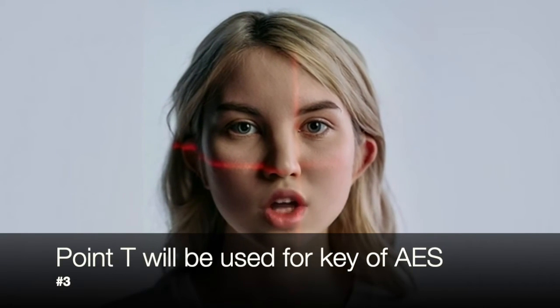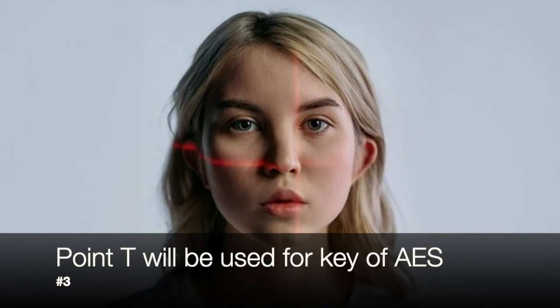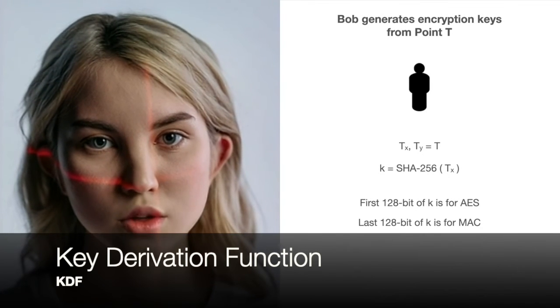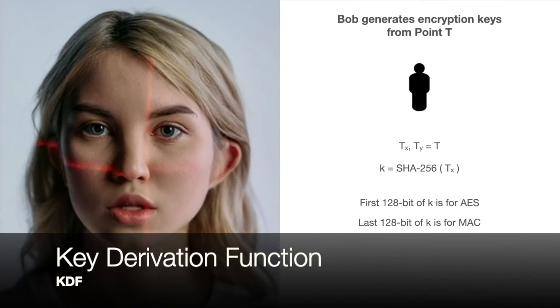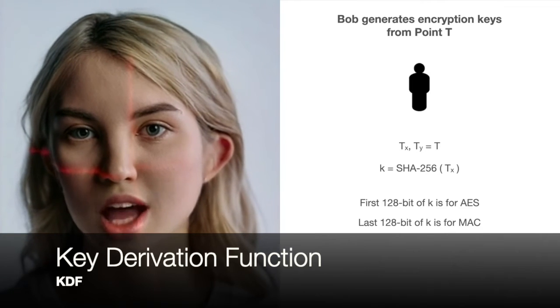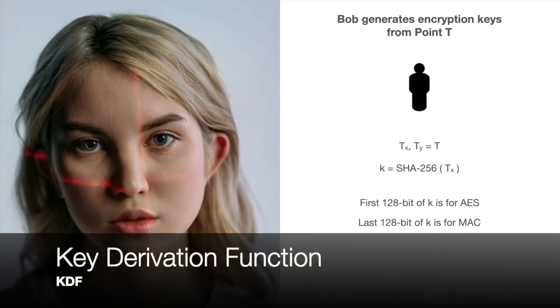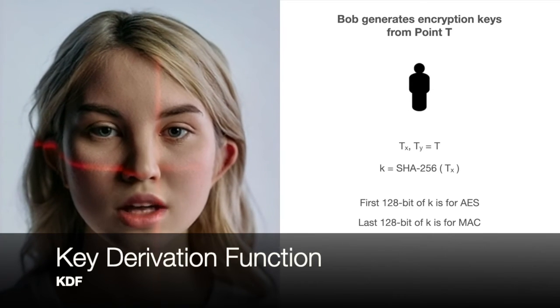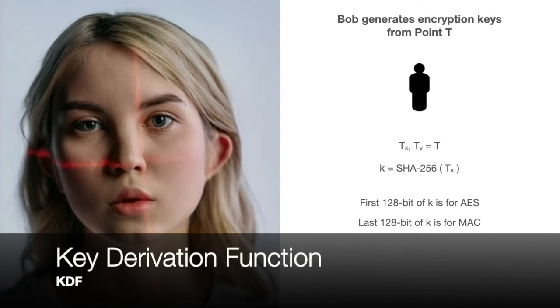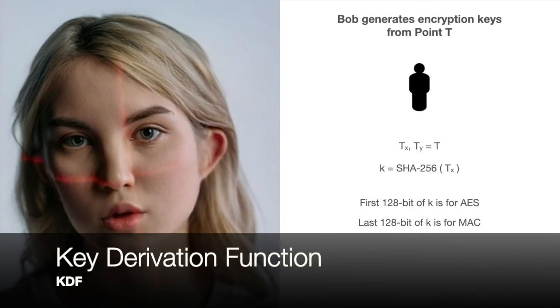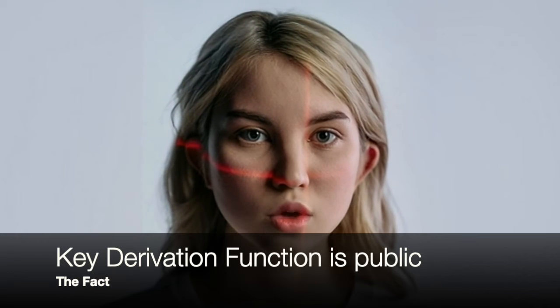With the secret T in hand, the sender can use it to generate a key and encrypt the message using a symmetric encryption algorithm. The x-coordinate of point T is fed into a key derivation function to generate a 256-bit key using SHA-256. The first 128 bits of the hash are used as the encryption key, while the last 128 bits are used as the key for a Message Authentication Code, or MAC.